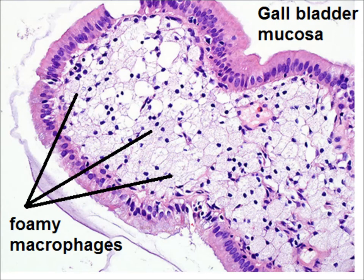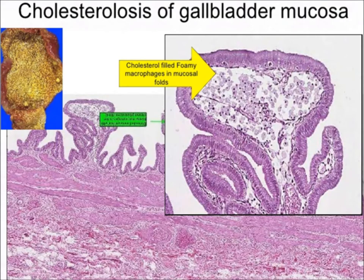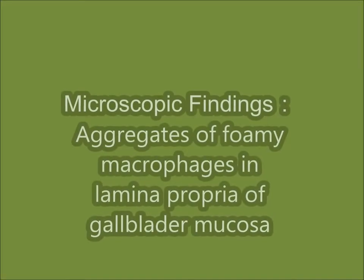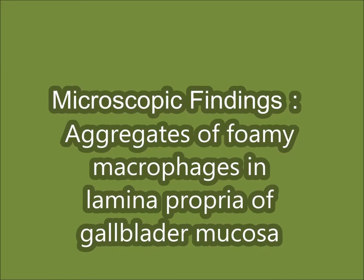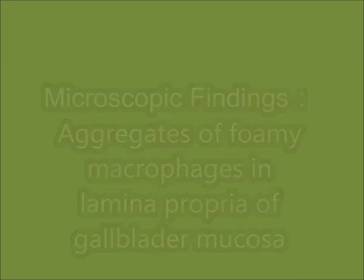In cholesterolosis, as you can see under the microscope, there are many foamy macrophages in the lamina propria of the gallbladder, covered by simple columnar epithelium. The microscopic findings are aggregates of foamy macrophages in the lamina propria of the gallbladder mucosa.